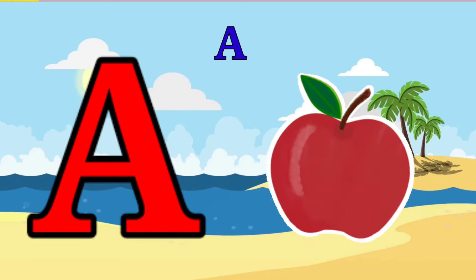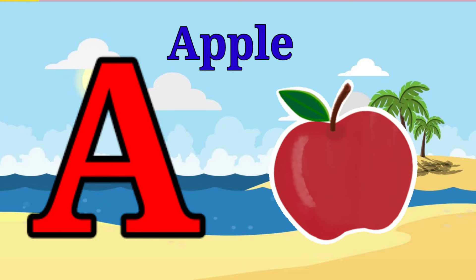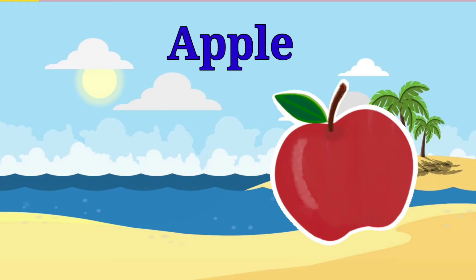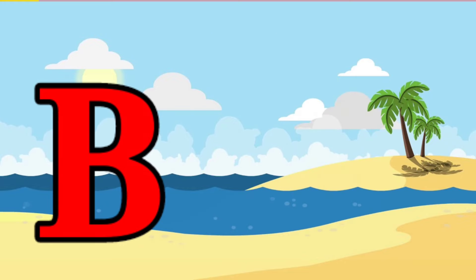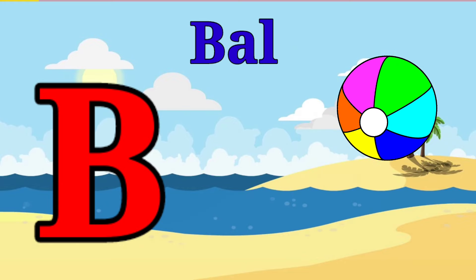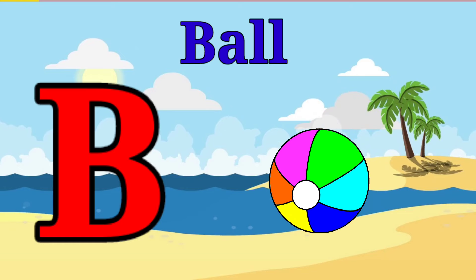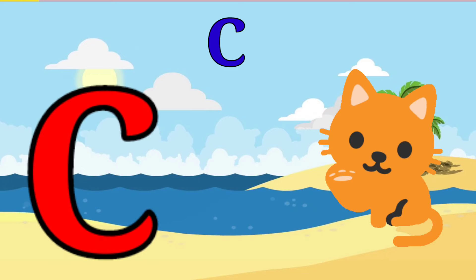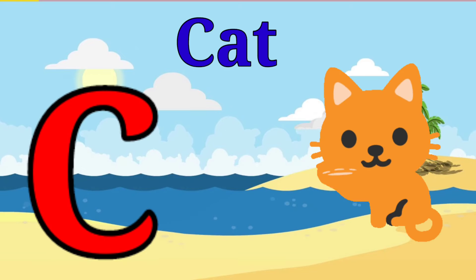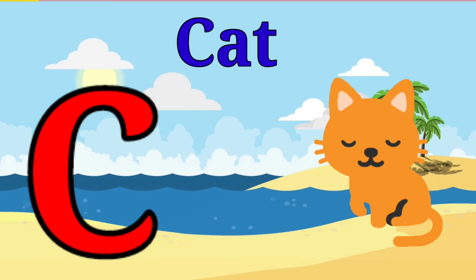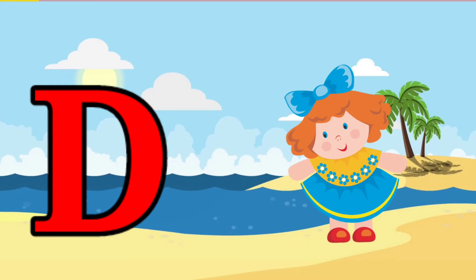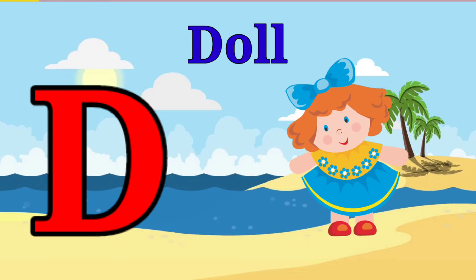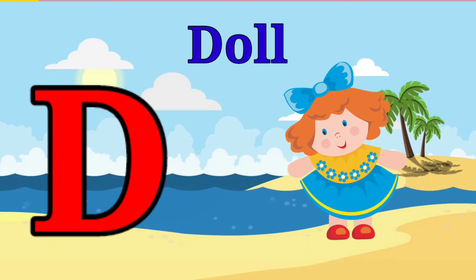A is for apple, a-a-apple. B is for ball, b-b-ball. C is for cat, c-c-cat. D is for doll, d-d-doll.